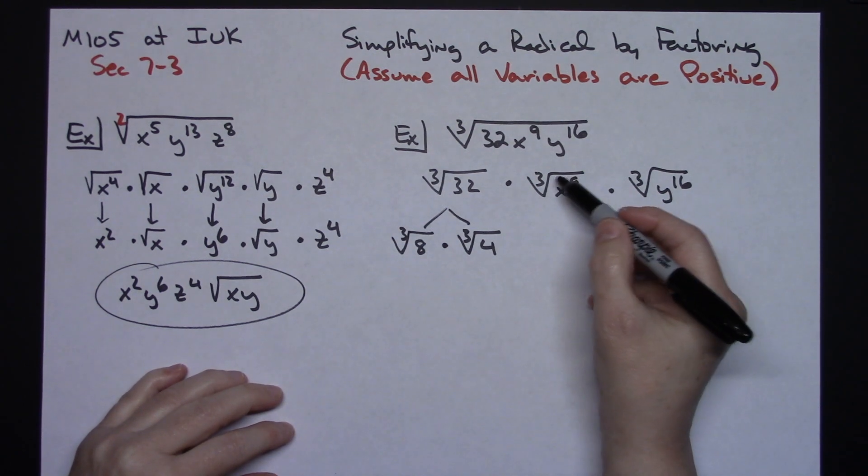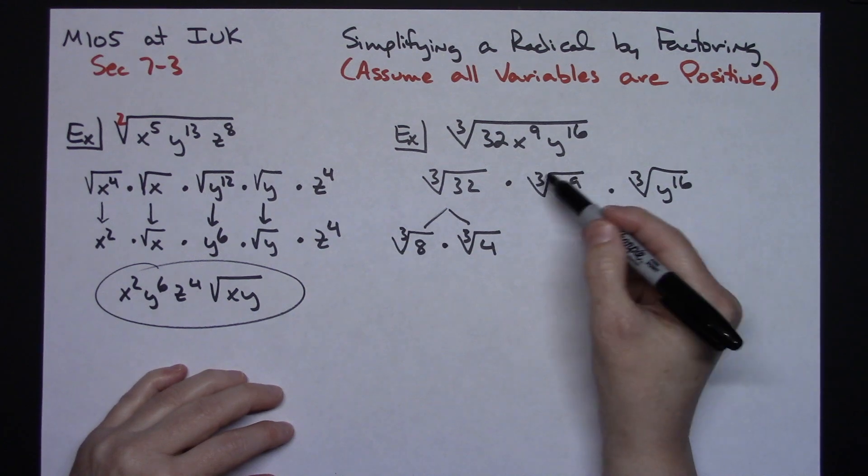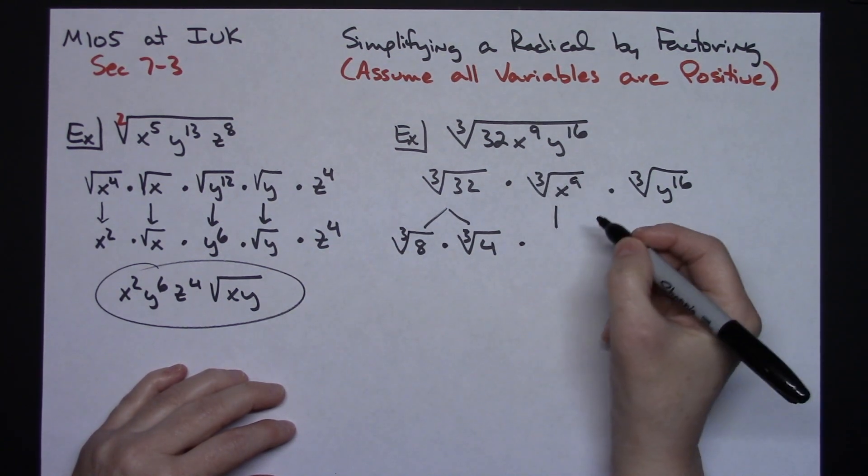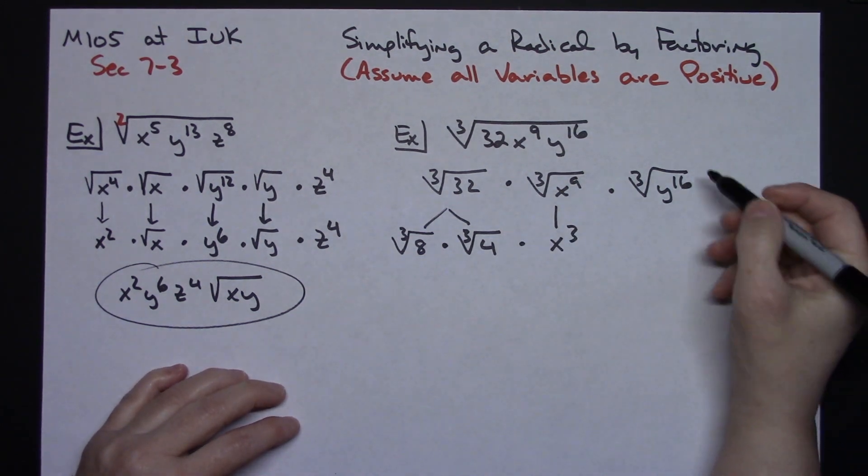Now again, we're going to take the look at these exponents here. 9 divided by 3. I can take 9 divided by 3. That means this is a perfect cube root as well. So 9 divided by 3 is 3. I'm going to have an x to the third because that is a perfect cube root.